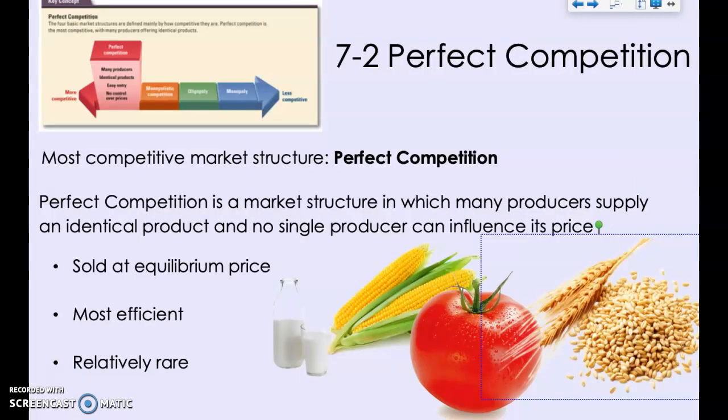Chapter 7 starts with perfect competition, which is the most competitive market structure. In a perfectly competitive market, there's a large number of firms producing basically the same product. All goods and services are sold at equilibrium price — the price set by the market when quantity supplied and quantity demanded is in balance. Economists consider perfect competition the most efficient market structure in terms of allocating resources to the people that value them the most.